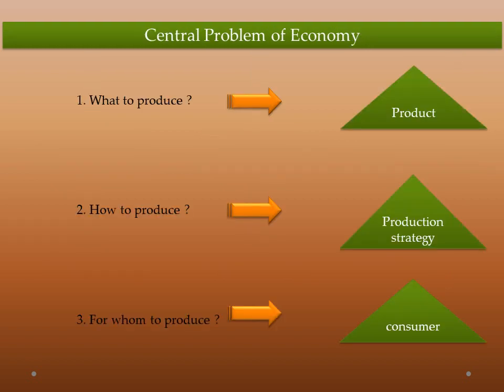Central problem of an economy involves three questions: first, what to produce; second, how to produce; and third, for whom to produce. The first question is related to product — there are two types of goods: luxurious goods and services, and common goods and services. The economy will decide whether to produce luxurious or common goods depending on the demand of the product.